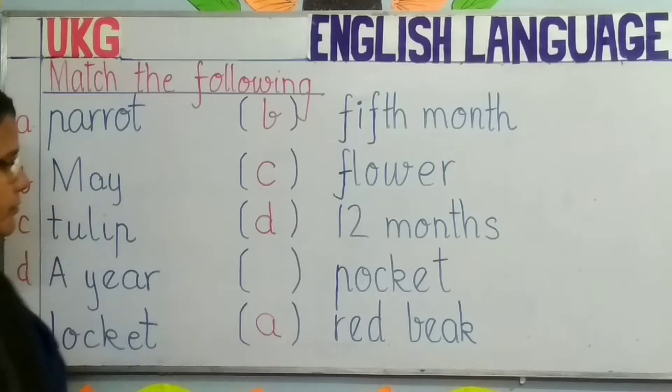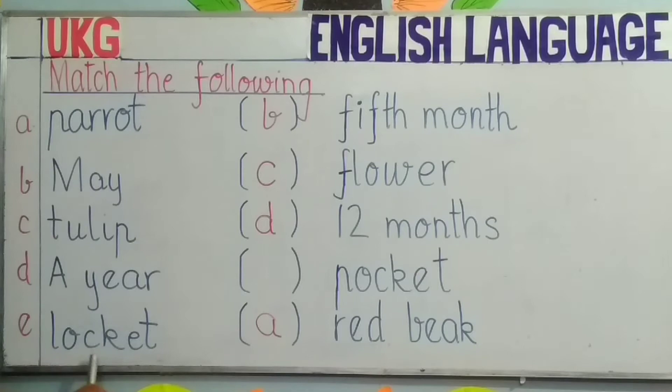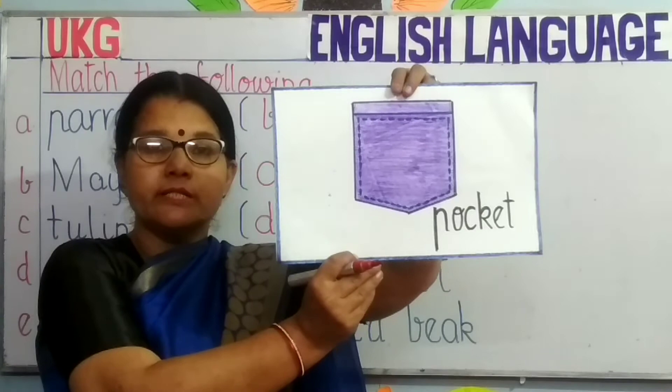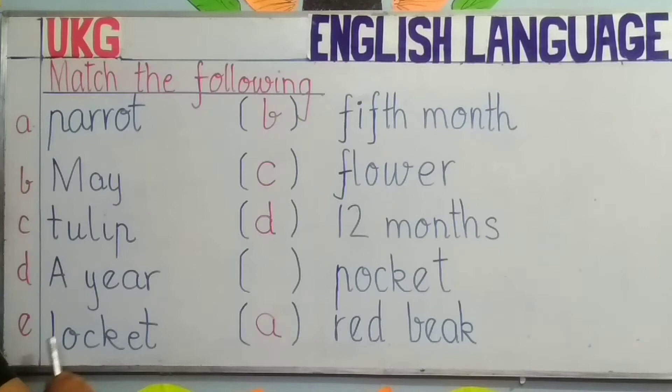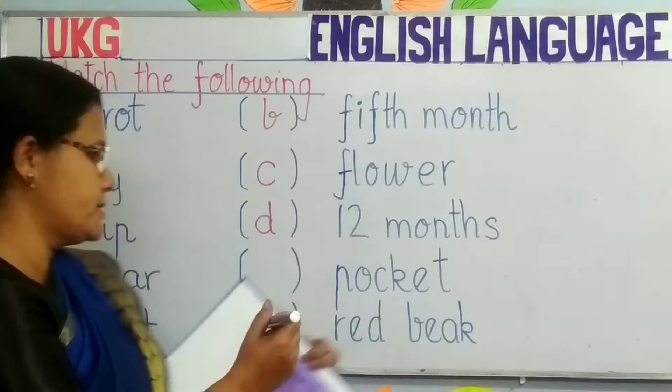And the last word now: locket. You will match locket with pocket. These are rhyming words. You will notice the first letter of both words is different, and the remaining letters are the same — that means these are rhyming words. You will write E, because locket and pocket match.